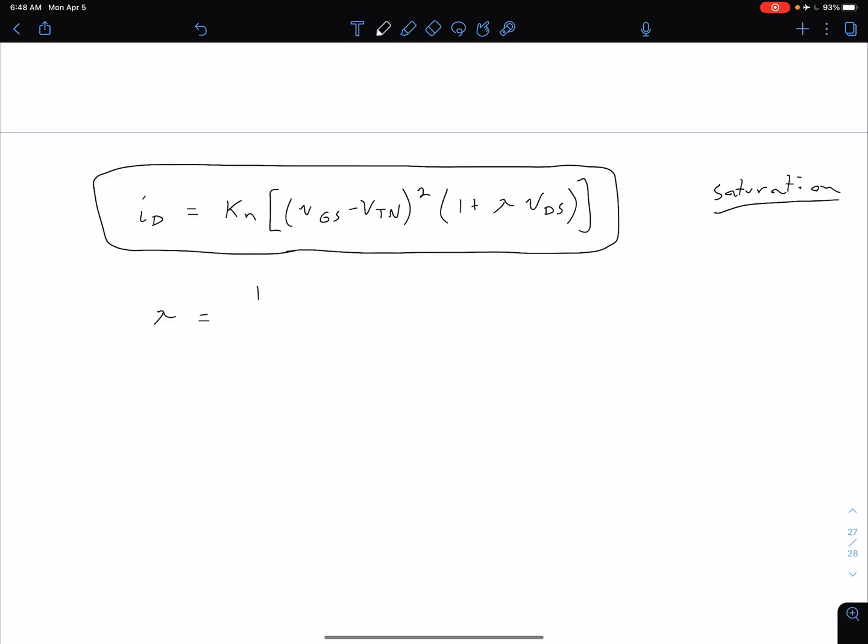Let's define what this lambda is. This lambda is equal to 1 over VA. The VA, as we'll see in an IV curve, is the same basic idea as our early voltage. The lambda is called our channel length modulation parameter.